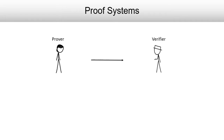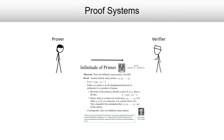A proof is a way for one party that we will call the prover to convince another party called the verifier about the truth of a statement. Traditionally, the way we think about proofs is that the prover writes out an entire sequence of steps, sends it to the verifier, who then checks these steps one by one and accepts the prover's claim if all these steps check out.